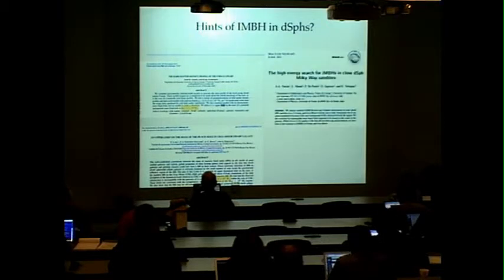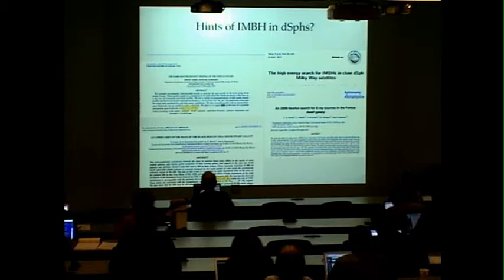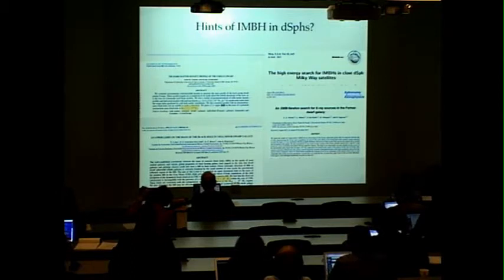And recent searches with XMM Newton and Chandra are finding some X-ray sources that are coincident with these two dwarf spheroidals. In the case of Fornax, they cannot give mass of the black hole because the center of gravity is not well constrained. It seems to be a lot of symmetry on the stellar surface distribution, so they can only give a limit on the accretion efficiency of Fornax that seems to be very low compared to the Eddington limit.